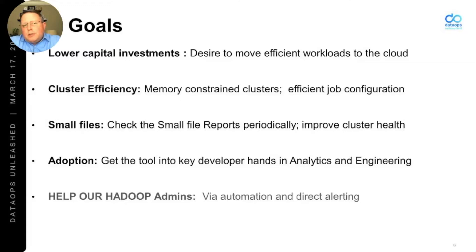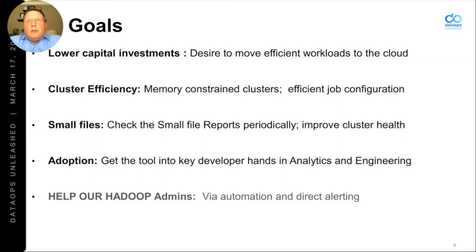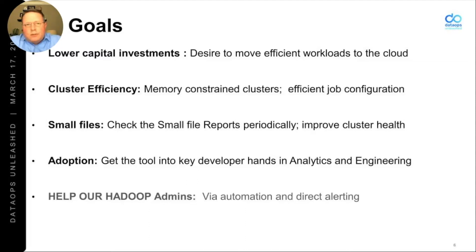Cluster efficiency is a big thing. We have memory-constrained clusters and we had inefficient jobs. One thing that Unravel is really great at is pointing out — we were doing it on a weekly basis — the things that were actually causing the most pain and suffering across the two main clusters we have in our environment.